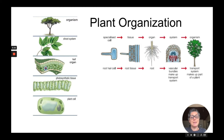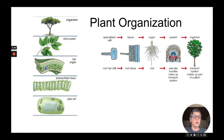Another example is a specialized cell like a root hair cell. This makes up part of the root tissue, which forms the organ known as the root, which is part of the vascular system — the system of transport — which is then part of the overall plant organism.